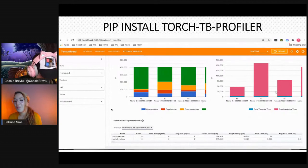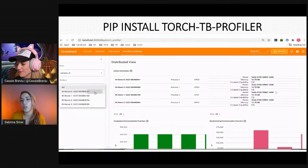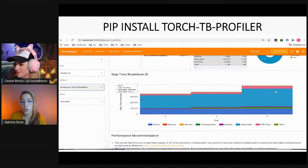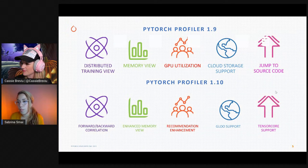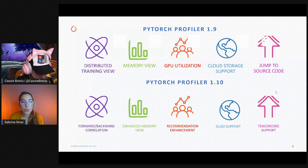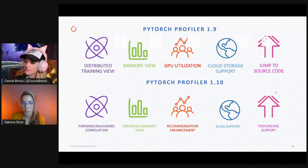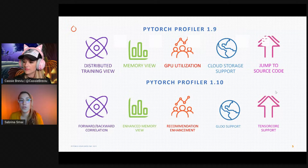I'll go over the new PyTorch Profiler release, covering older features from the previous release such as distributed training view, memory view, GPU utilization, cloud storage support, and the VS Code jump to source code feature. Then I'll talk about new features in version 1.10 that just got released.